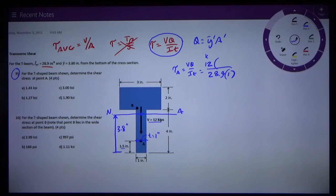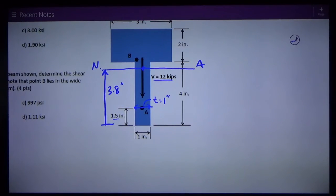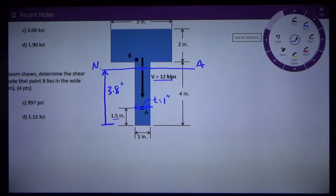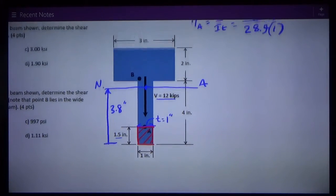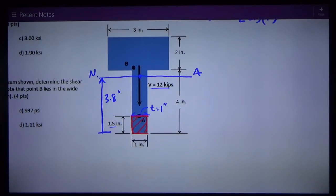Okay, so Q is the area of the cross section away from the neutral axis. So if we're at point A, it's the area away from the neutral axis as opposed to towards the neutral axis. So it's this area right here. So Q for this shape is one and a half inches tall, one inch wide, so it's 1.5 inches. That's A prime.